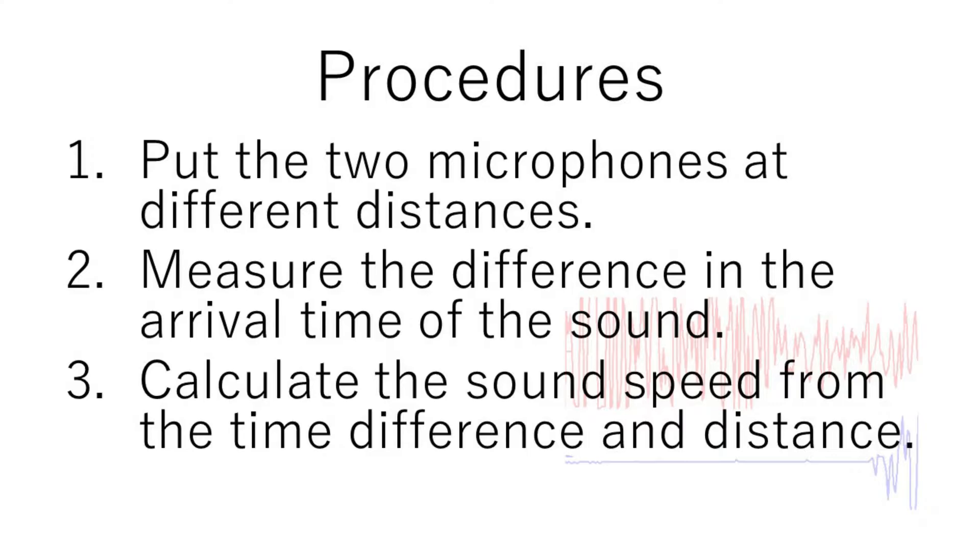Procedures: Put the two microphones at different distances. Then, measure the difference in the arrival time of the sound with an oscilloscope or data logger. Finally, calculate the sound speed from the time difference and distance.